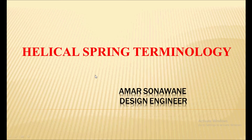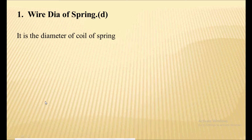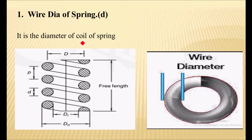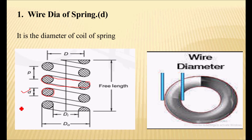Hello everyone, in this video we will discuss the helical spring terminology. The first term is the wire diameter of the spring, denoted by small d. It is the diameter of the coil of a spring, as you can see in this drawing. The wire diameter is the diameter of the coil, denoted by small d.